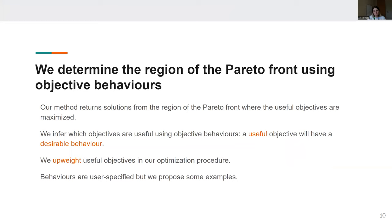Our method returns solutions from the region of the Pareto front where the useful objectives are maximized. And we infer which objectives are useful using these objective behaviors I mentioned. And the idea is that a useful objective will have a desirable behavior. We upweight useful objectives in our optimization procedure and behaviors are user-specified, but we do propose some examples in our work.